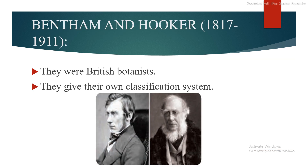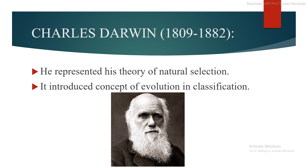Next is Bentham and Hooker, the time period was 1817–1911. They were British botanists and gave their own classification system. Next is Charles Darwin, the time period was 1809–1882. He represented his theory of natural selection, which introduced the concept of evolution into the classification system.